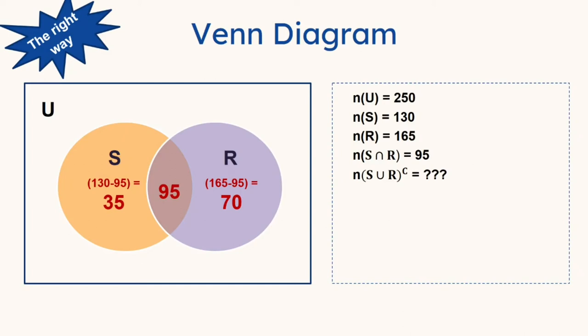Now using the process of elimination, you know that your universe consists of 250 occurrences. We just need to subtract 35, 95, and 70 out of the 250 total, which gives us 50. And that fits your entire universe. And so the cardinal number of S union R complement is 250 minus 35 plus 95 plus 70, which all equals to 50.